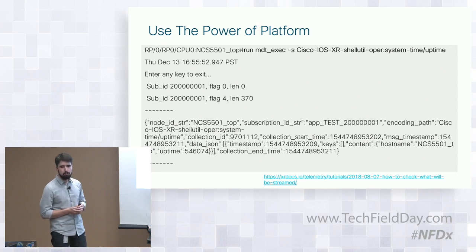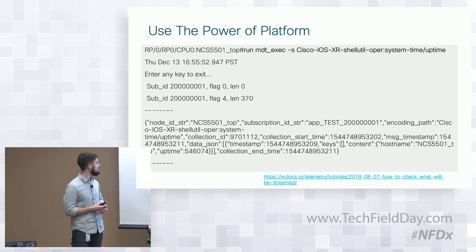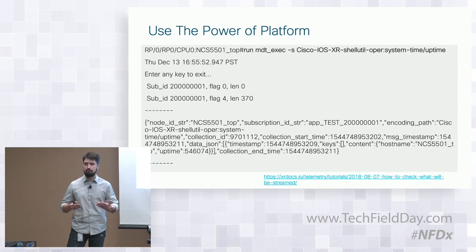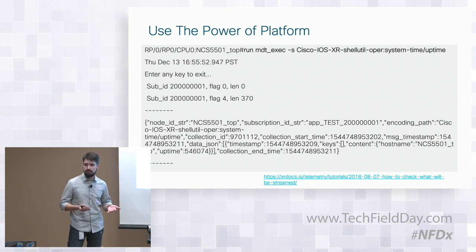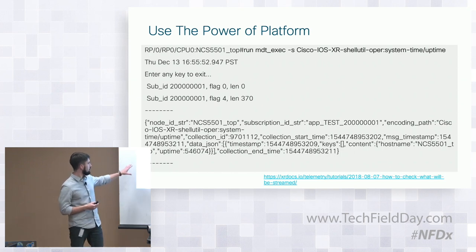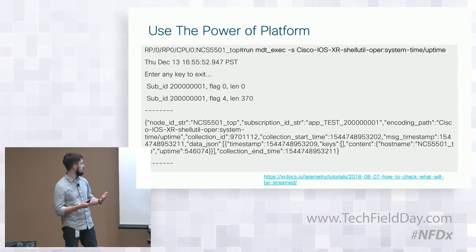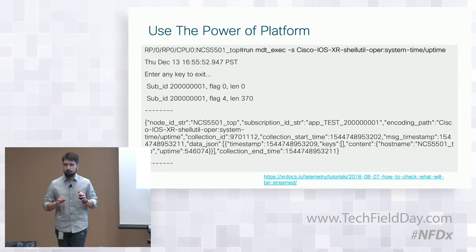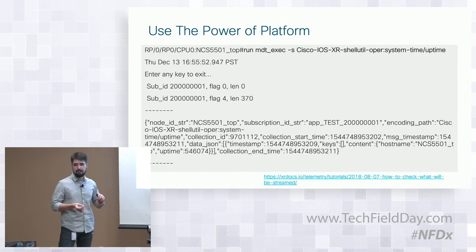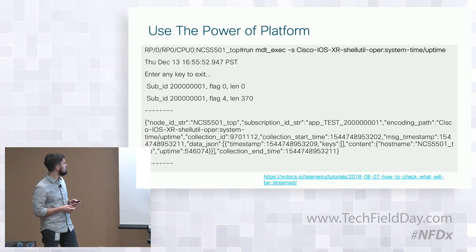There are some tricks for using telemetry. One neat trick is to run the MDT exec command on a device to check what's streamed right from the box — no telemetry stack needed. You just execute this command, provide a sensor path, and you will have data streamed out of your device. If you want to quickly try it to figure out a sensor path, whether it's right for you and has proper data, here's your small trick.